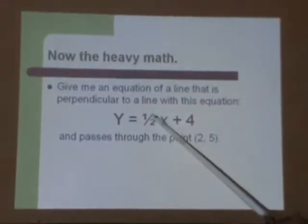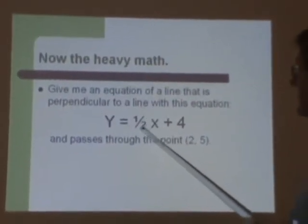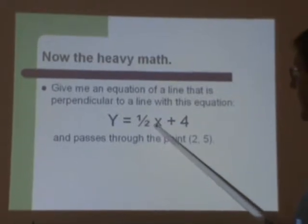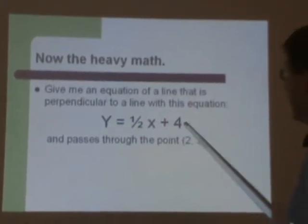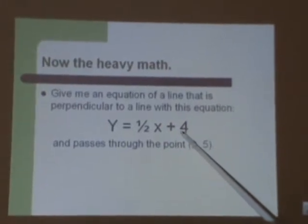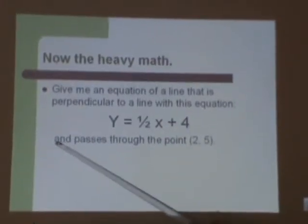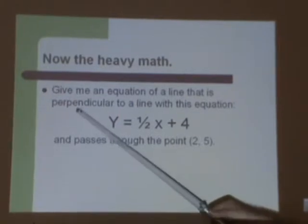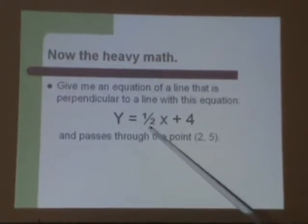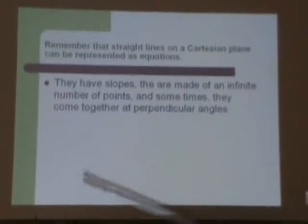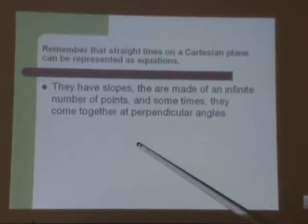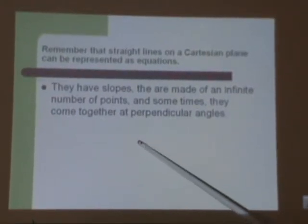Here's a line. Here's a line that has a slope of one-half, because that's where the slope goes, multiplied by the x, and it has a y-intercept of 4. That's not too important. We need another line that is perpendicular to this line, but passes through this point.